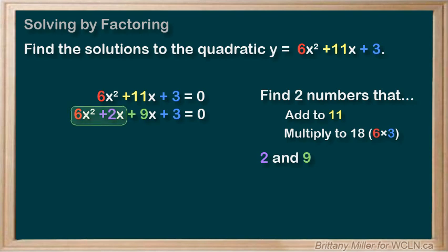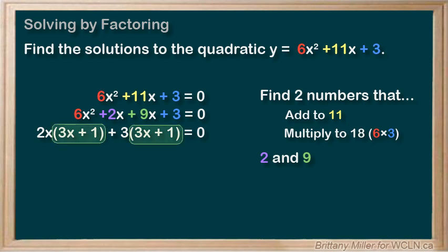We can take a 2x out of the first half and a 3 out of the second half, giving us 2x(3x+1) + 3(3x+1). Then we take the 3x+1 out front, leaving us with (3x+1)(2x+3) = 0.